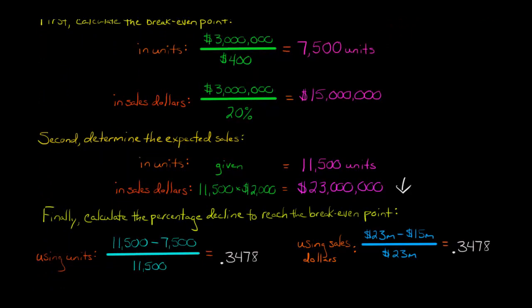So again, I've got it presented each way. If we use the units, and we'll get to the same answer either way, but I just want to show you each way. If we do the units, we say to get the percentage decline, take the 11,500 minus the 7,500 up here. So that's 4,000 divided by 11,500. That gives you 0.3478. What does that mean? That means that sales, in terms of units, you could sell 34.78% fewer units before you would start losing money.